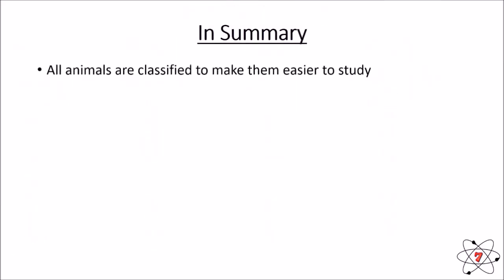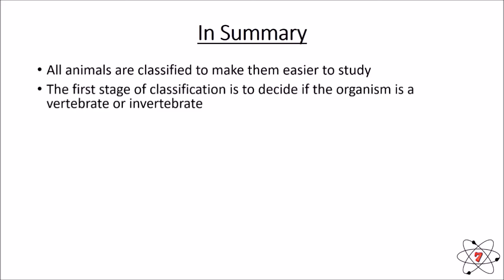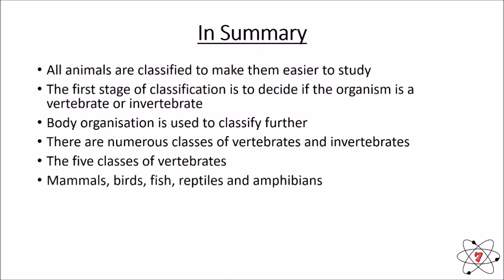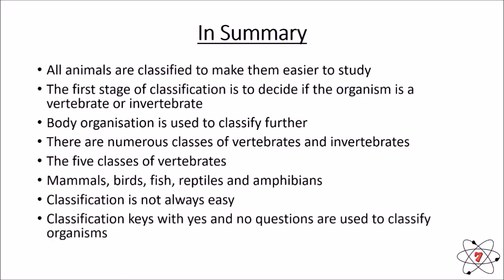In summary, all animals are classified to make them easier to study. The first stage of classification is to decide if an organism is a vertebrate or an invertebrate. Body organization is then used to classify living things further. There are numerous classes of vertebrates and phyla of invertebrates. The five classes of vertebrates are mammals, birds, fish, reptiles, and amphibians. Classification is not always easy, because sometimes it seems that organisms have features from different classes. So we can use a classification key with yes-or-no questions to help us classify organisms. I hope you now know the main phyla and classes of vertebrates and invertebrates and the features they have, and how to use a classification key. Until next lesson, keep on learning.